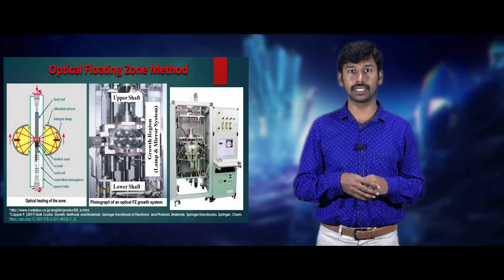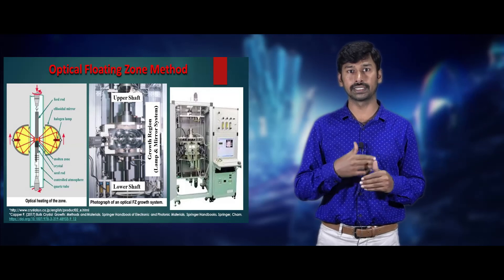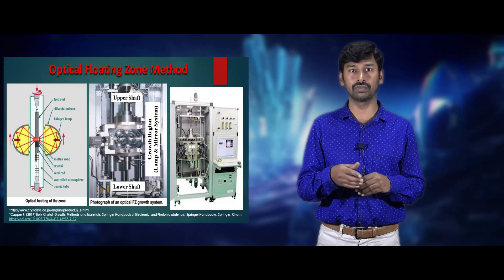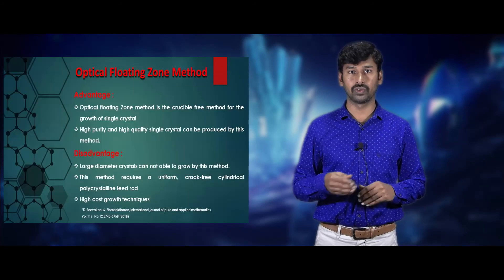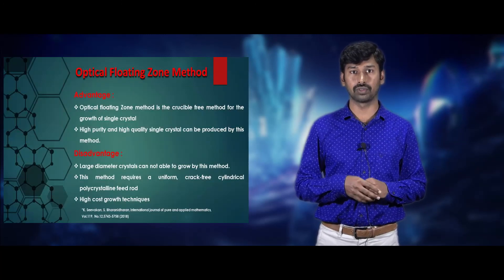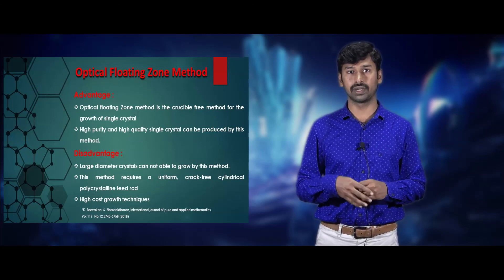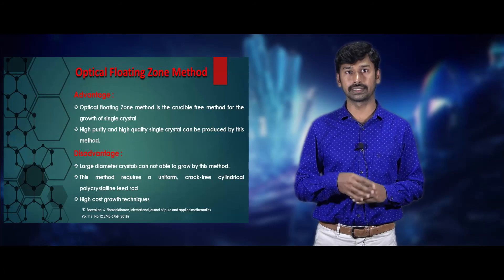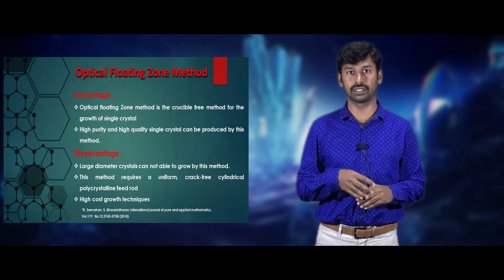The schematic diagram of the optical floating zone furnace shows the feed rod fixed at the upper shaft and seed crystal at the lower shaft, with two lamps and elliptical mirror focusing systems used to create the liquid zone. Advantages: it is a crucible-free technique producing high quality and high purity single crystals. Disadvantages: it is a high cost technique, large diameter crystals cannot be grown, and it requires a uniform cylindrical crack-free polycrystalline feed rod.